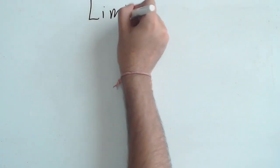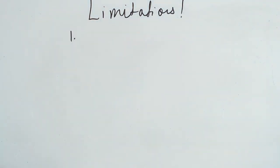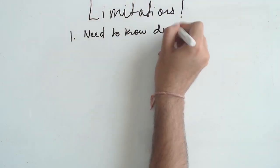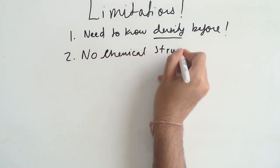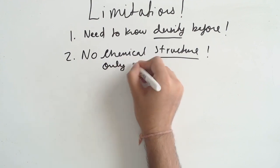But some limitations include needing to know the density of the sample beforehand, and also not easily being able to know the chemical structure, only the composition. And this is due to the fact that we're exploiting nuclear to nuclear interactions for scattering.